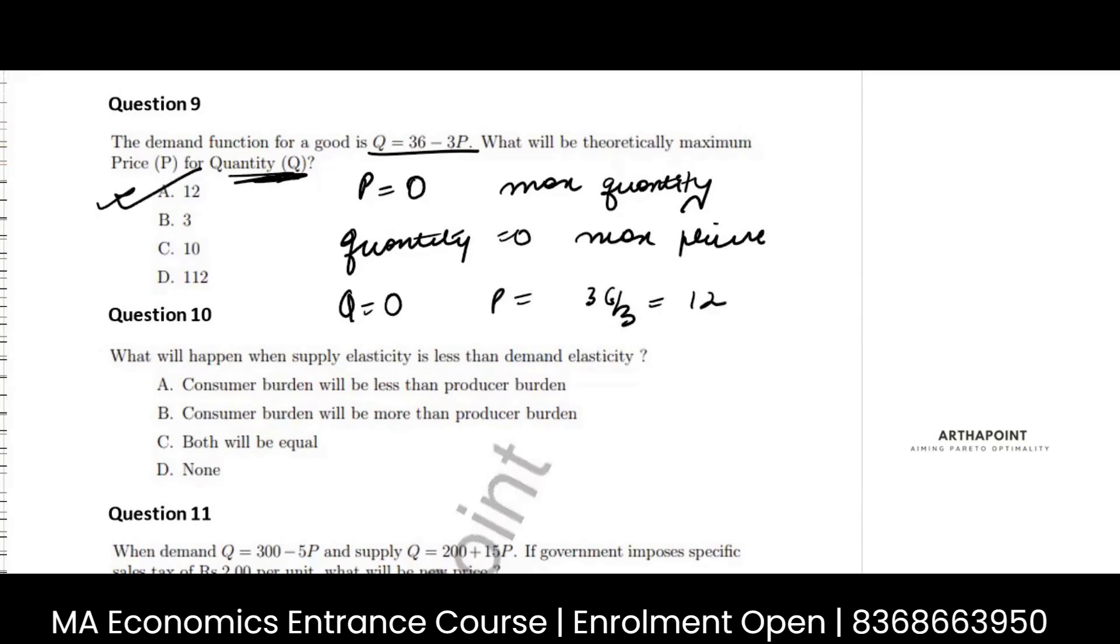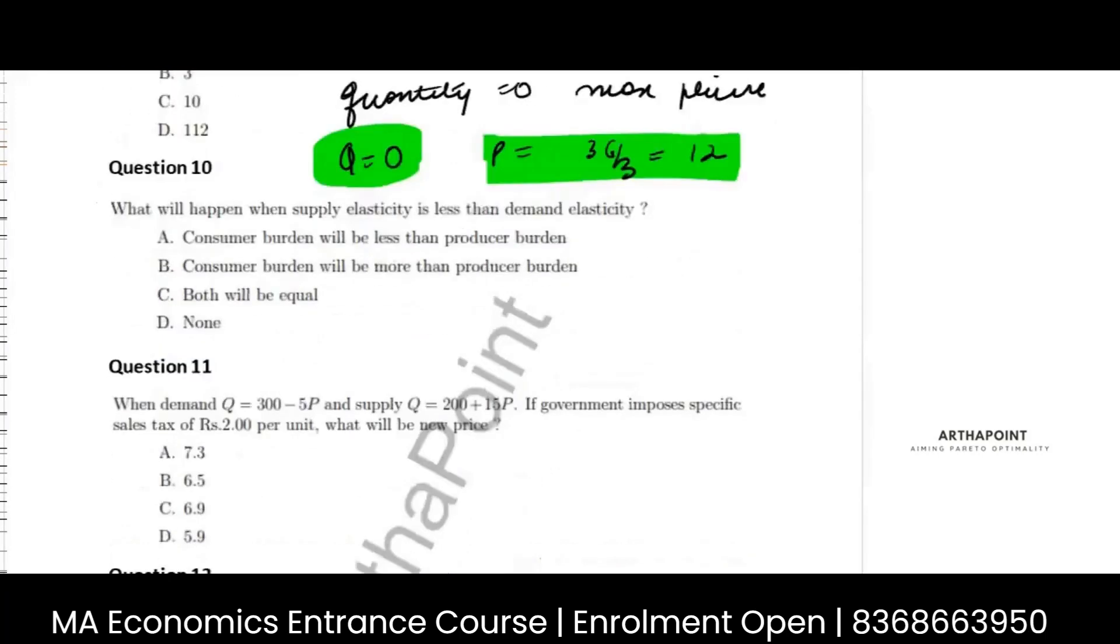It's asking maximum price. So, I will put quantity as 0. Then I have 0 units being demanded and charging the maximum price. Right. Okay.